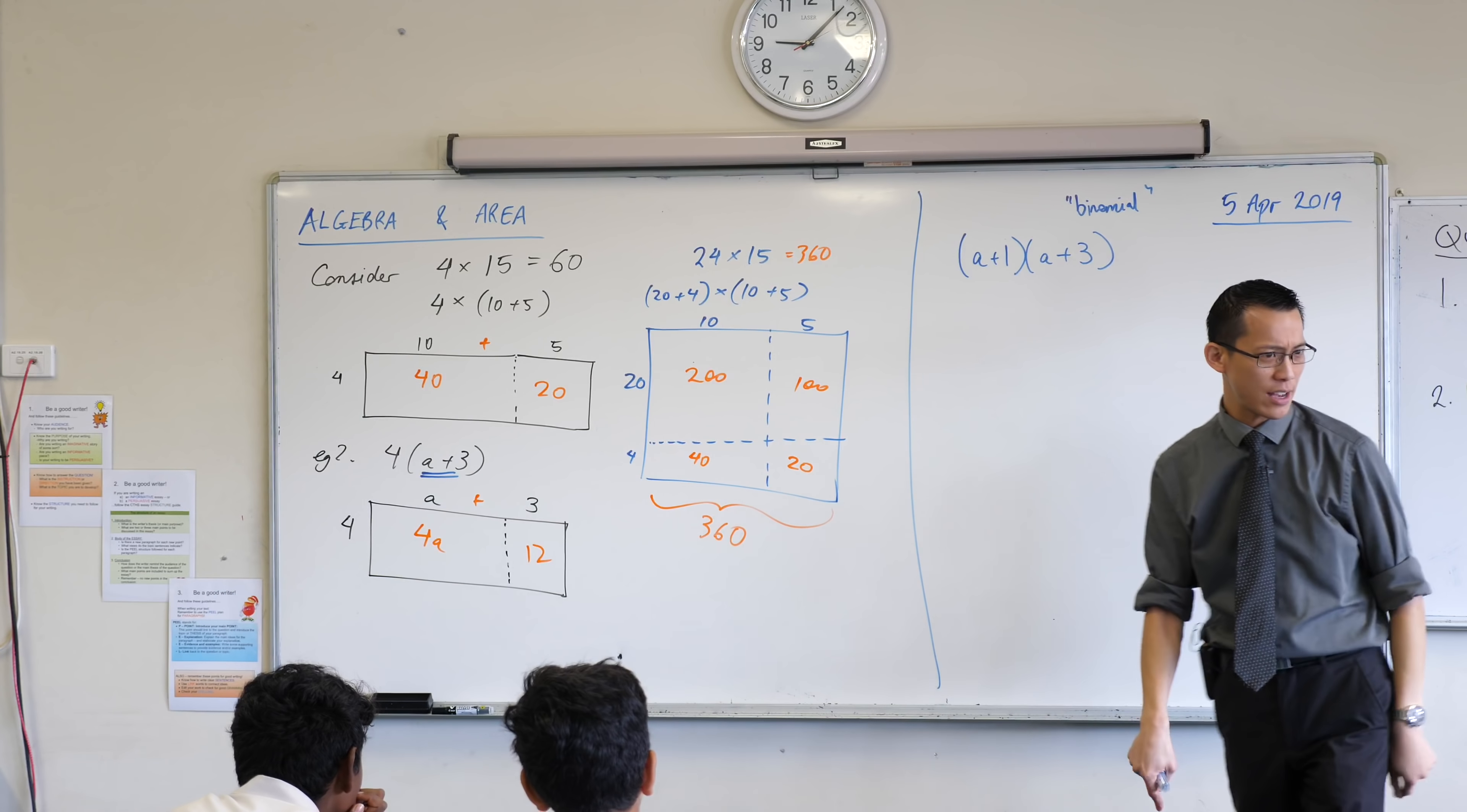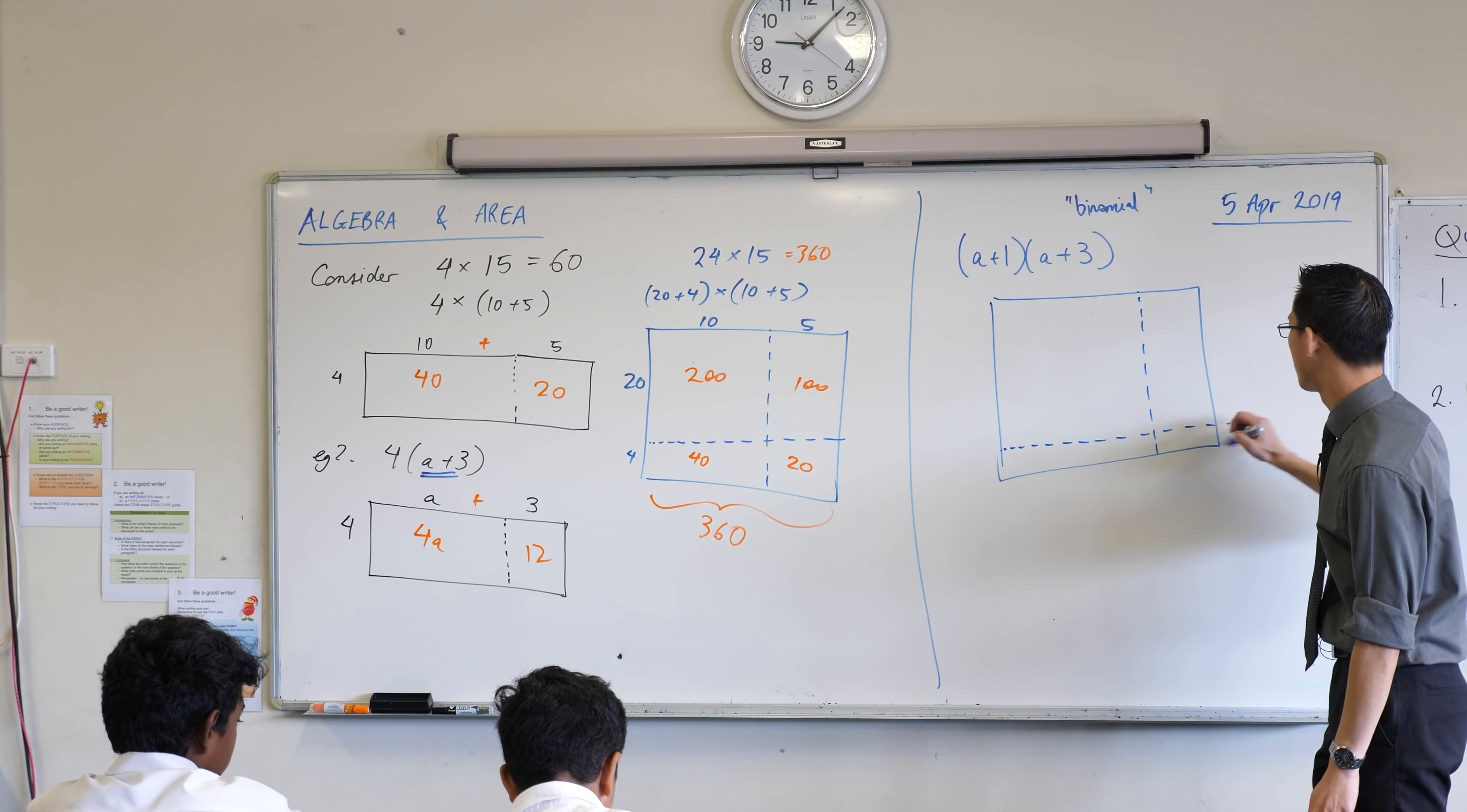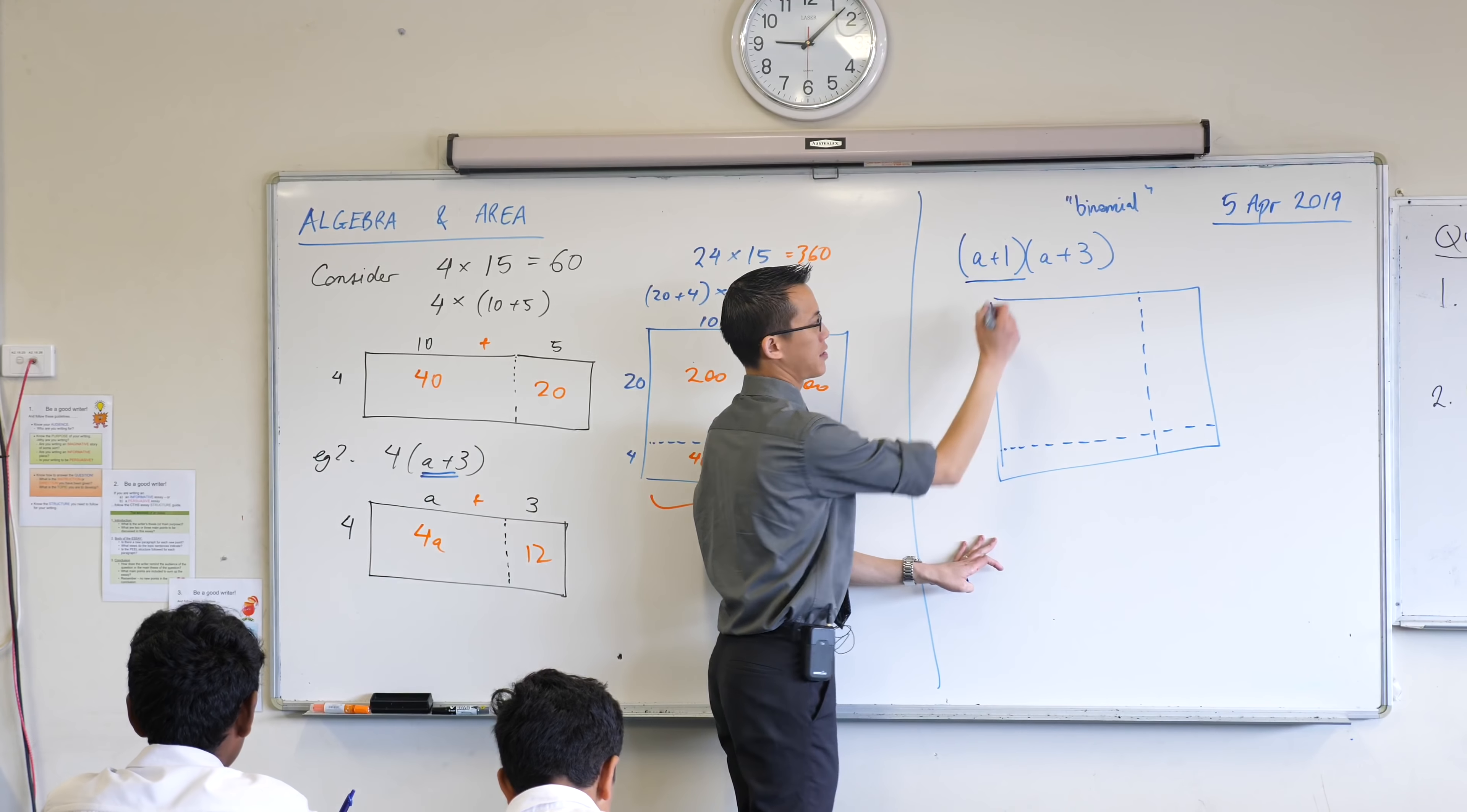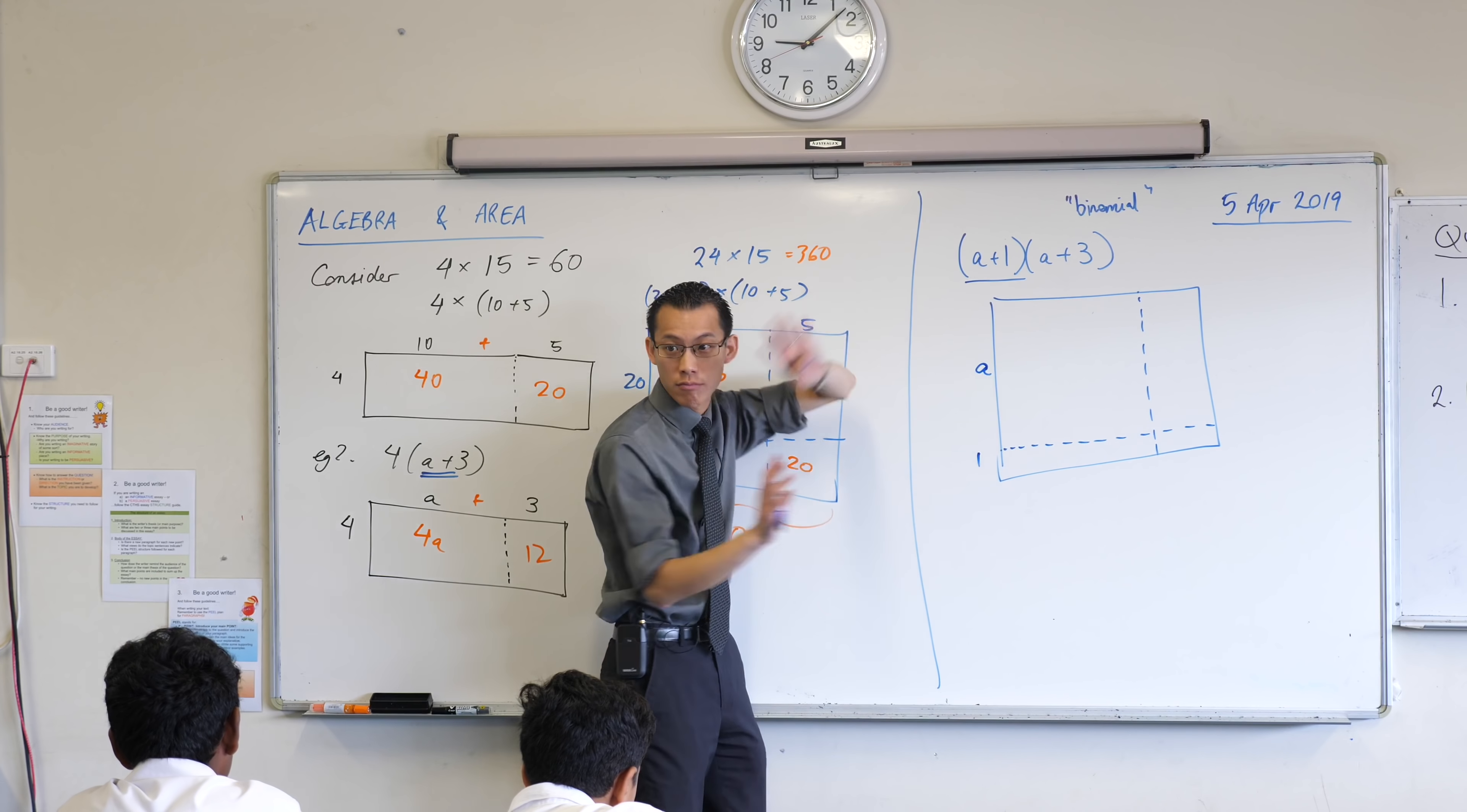Now it actually doesn't matter which one you make which, but on this vertical length over here, I'm going to make that refer to this guy on the left hand side. So I've got two lengths here, right? One of them is going to be A, and the other one's going to be 1. So this height here is A plus 1. Following so far?